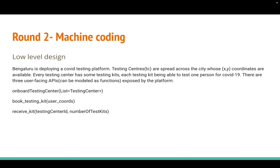For the onboarding testing center API, it's a one-time call where you are given a testing center and you have to store it in an in-memory system — no database connection required. They were very specific about this. You can use a list or any in-memory structure. Each testing center will have a unique ID, a location, and the number of kits available. This is a POST API.